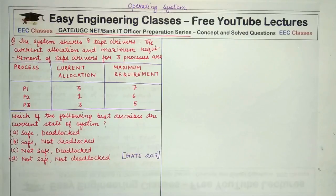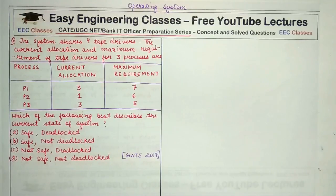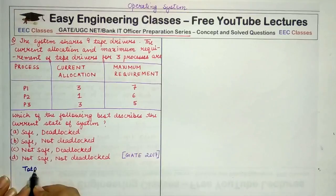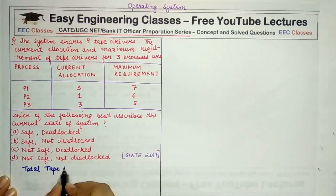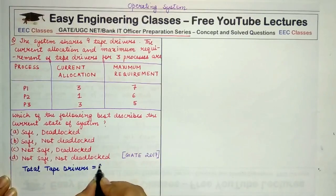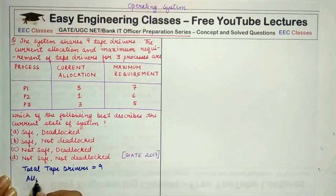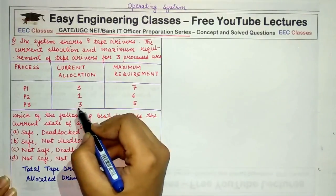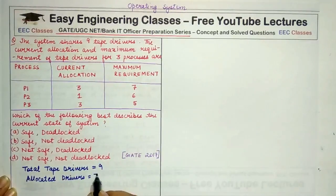Which of the following best describes the current state of the system? So the total tape drivers that you are told are 9. And how many are allocated? The total allocated drivers would be 3 plus 1 plus 3 which is 7.